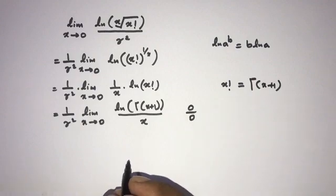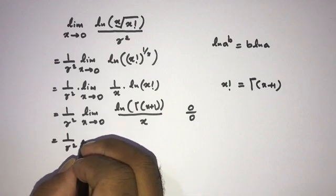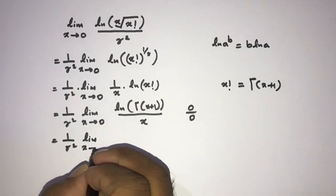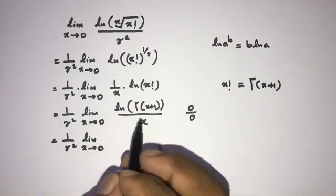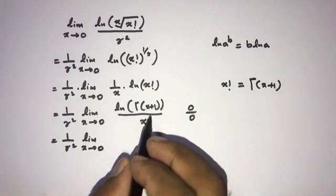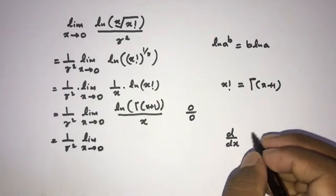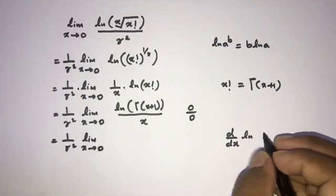Yeah, now we can use L'Hospital's rule. So here, 1 over gamma squared, limit x approaches to 0. Now derivative of the numerator and derivative of the denominator.